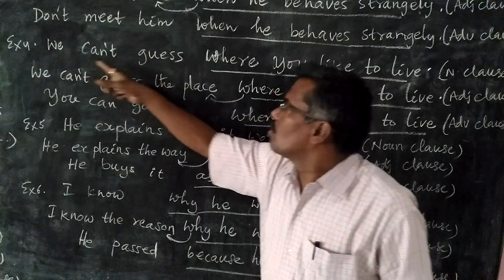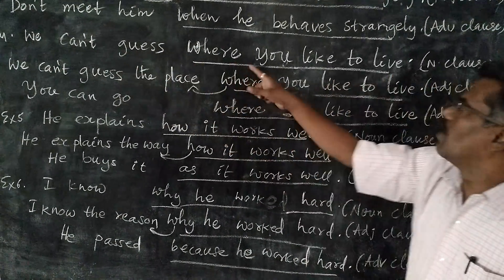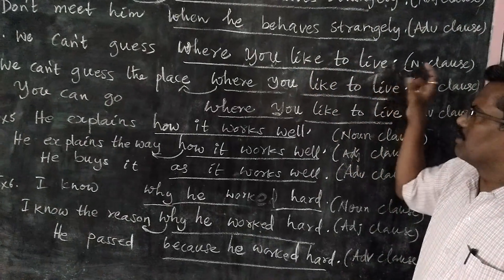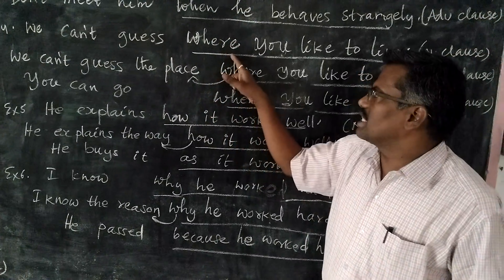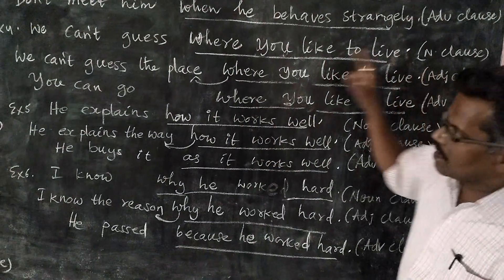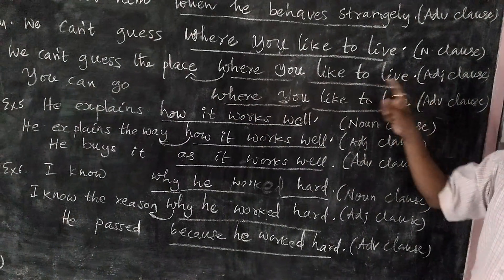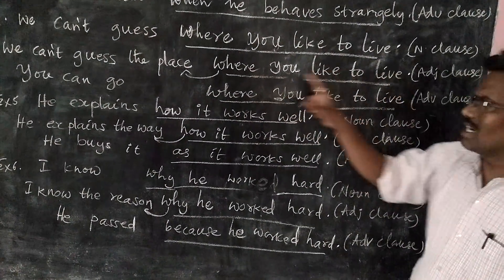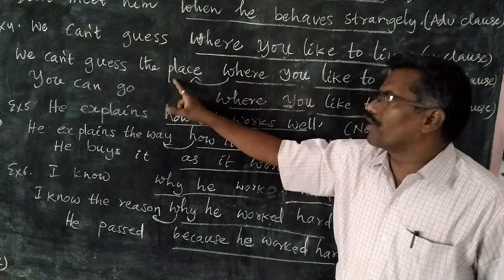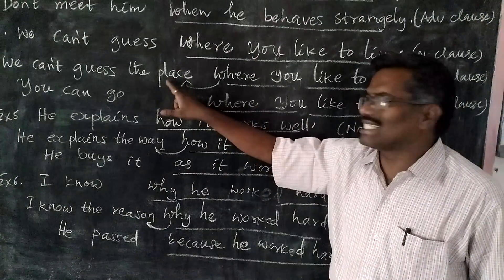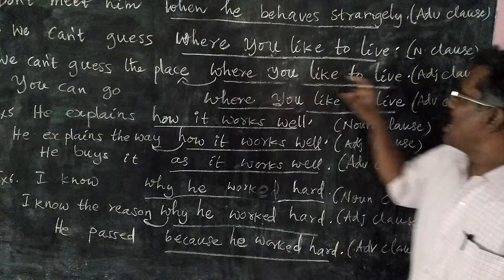Example number four: 'We can't guess where you'd like to live.' We can't guess what? 'Where you'd like to live' — so this clause answers the question 'what,' making it a noun clause. Next: 'We can't guess the place where you'd like to live.' Here, 'where you'd like to live' describes a noun before it — 'place.' It has an antecedent before it, so it is called adjective clause.